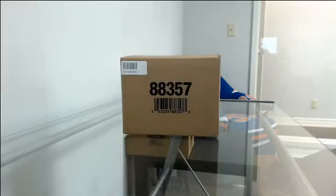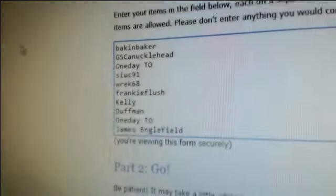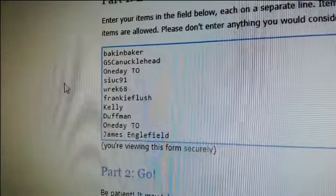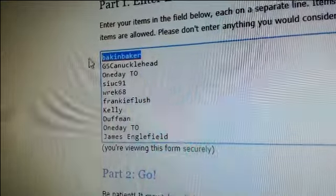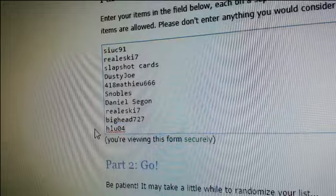First thing we're going to do is randomize the list of participants. Everybody's on here in the requested spot number starting with Bacon Bakery at spot number 1, down to Hulu in spot number 30.